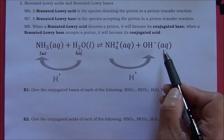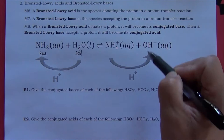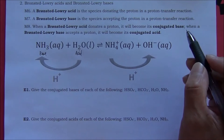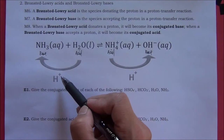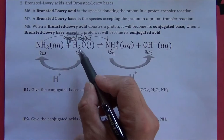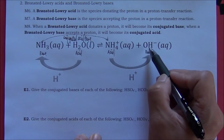Looking at the reverse reaction: ammonium ion will donate a proton and hydroxide ion will accept a proton. From the definition, ammonium ion is an acid and hydroxide ion is a base. When a base accepts a proton, it will become its conjugate acid. Water and hydroxide ion form a conjugate acid-base pair.